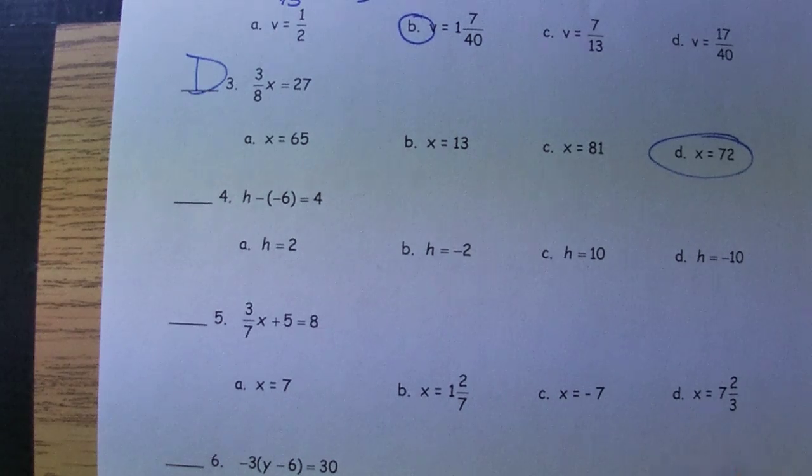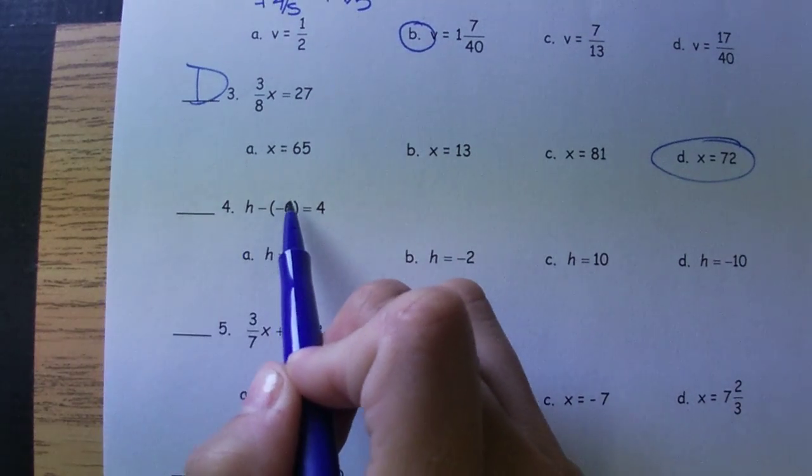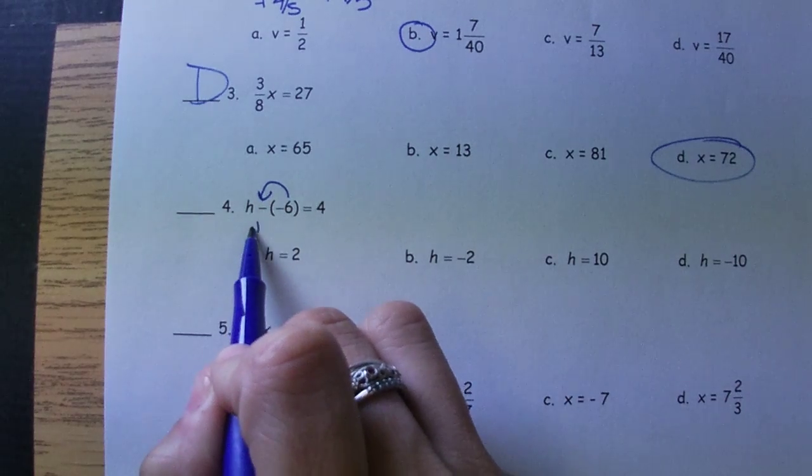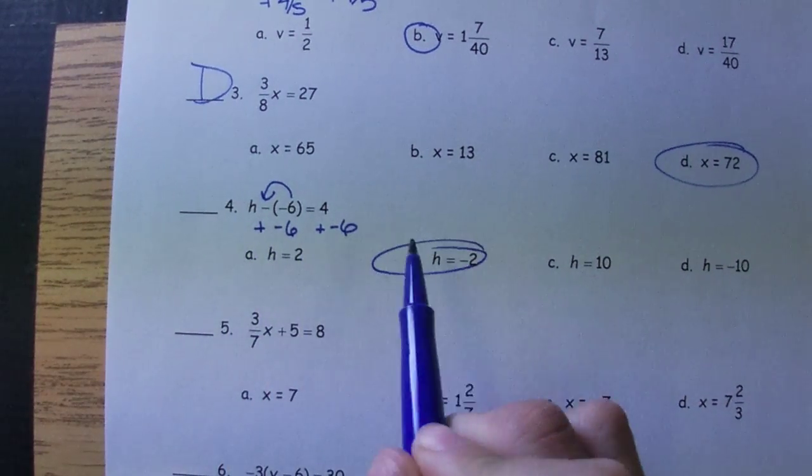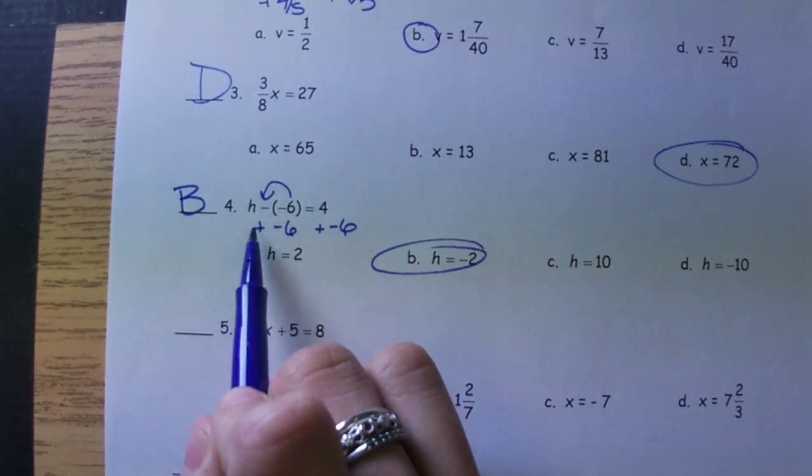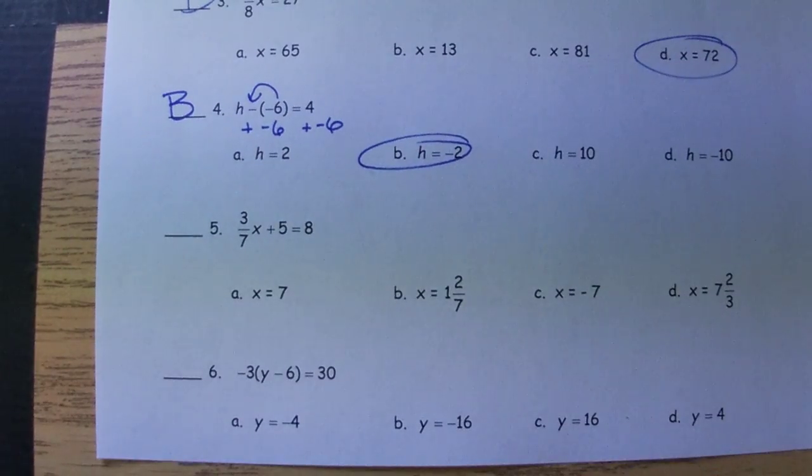Number four, we want to solve for H. We have a negative 6, so to move the negative 6, we will undo subtracting by adding a negative 6, which gives us a negative 2. If you wanted to change that into addition and then subtract, that would be fine as well.